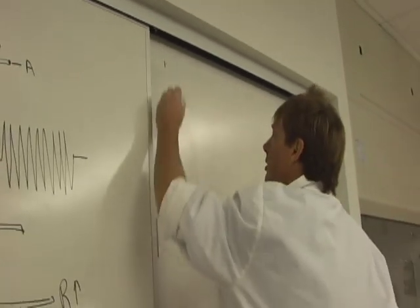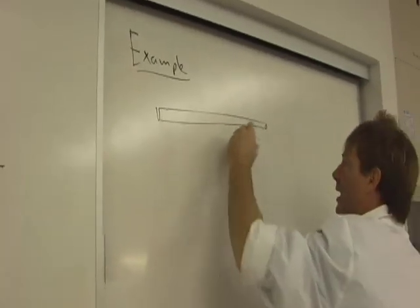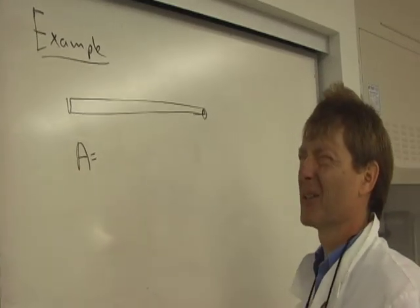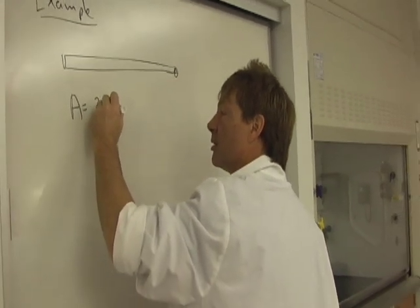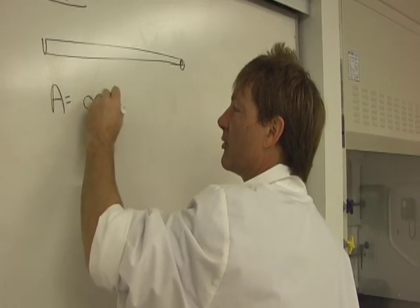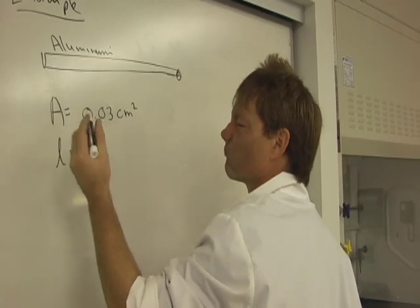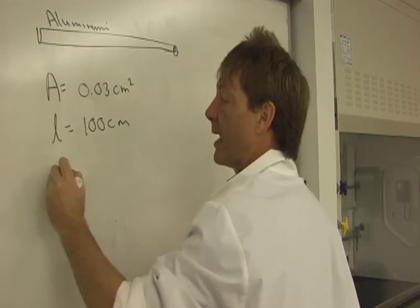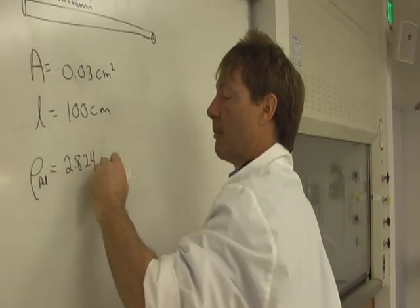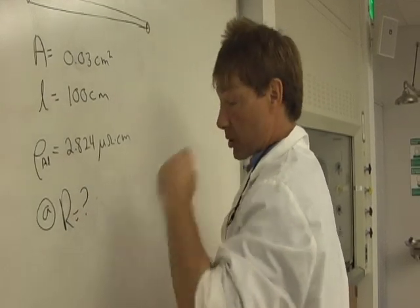Let me just do a simple example. Let's say we've got a wire. And it's got a cross-sectional area of maybe a millimeter squared. So maybe it's three square millimeters, which would be 0.03 square centimeters. And let's say it's aluminum. The length is 100 centimeters. And the resistivity of aluminum is about 2.824 micro-ohms times centimeters. So, what's the original resistance? I'll call it R1.